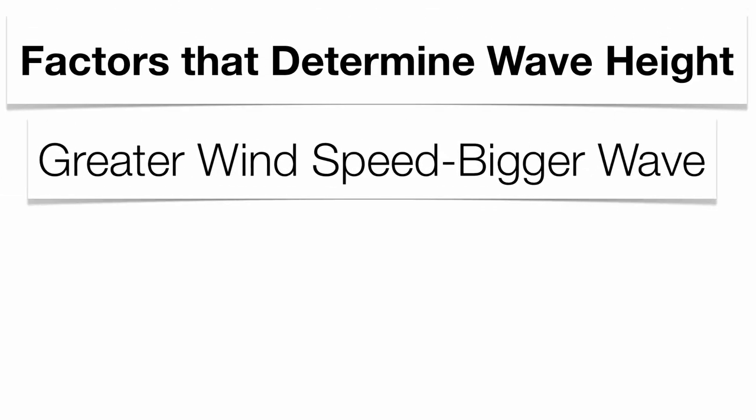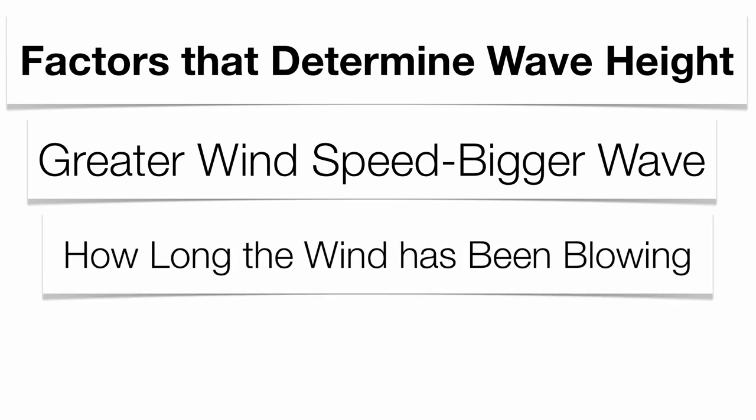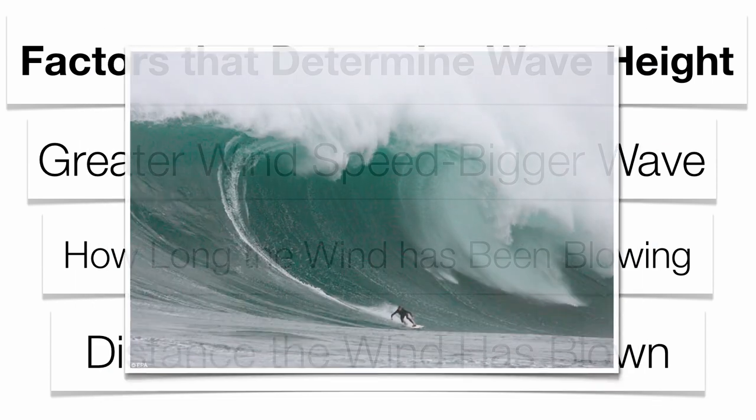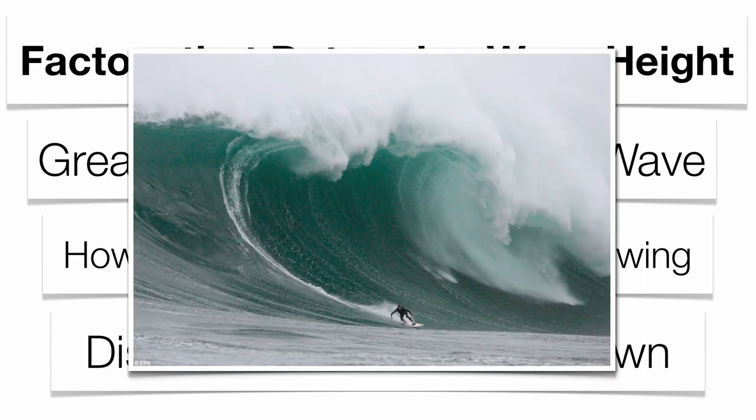There are a couple factors that are going to determine wave height. The first and number one reason is the greater the wind speed, the bigger the wave. There's a tremendous amount of friction between wind and water, and the more friction there is, the more energy is going to be transferred from the moving air to the moving water — the bigger the wave is actually going to be. We also want to measure how long the wind has been blowing across the water and the distance it's been blown across. That distance is what we call the fetch.